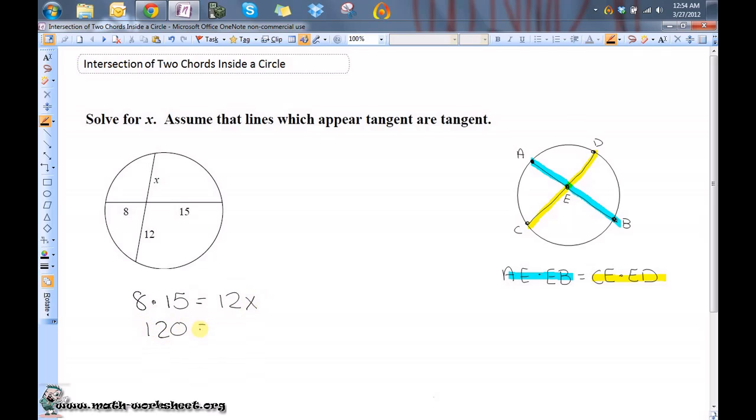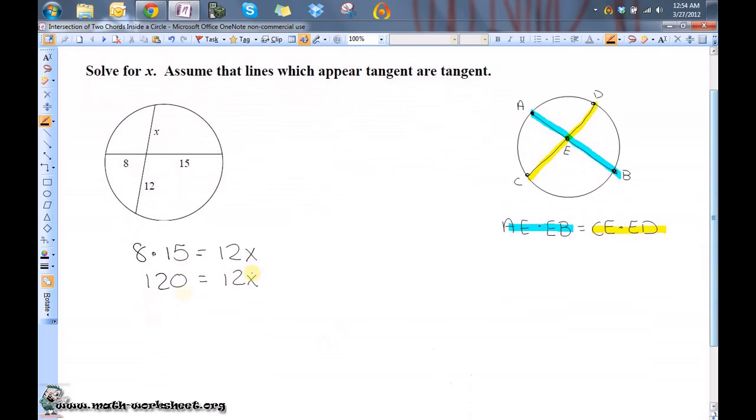So, 120 equals 12x, and now all we need to do is use some simple algebra to solve for x. That means we divide both sides by 12, so 10 is equal to x.